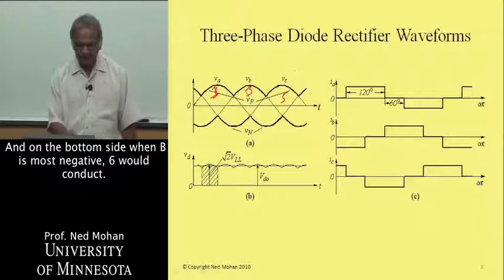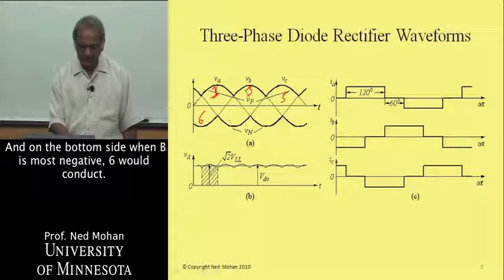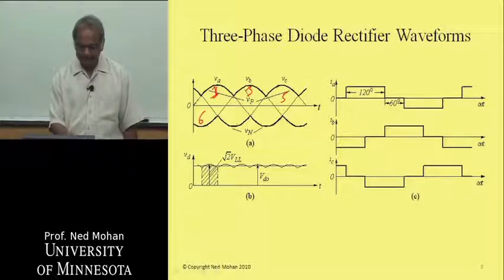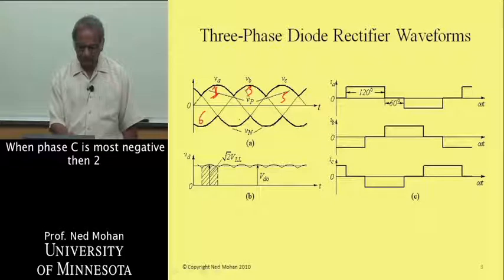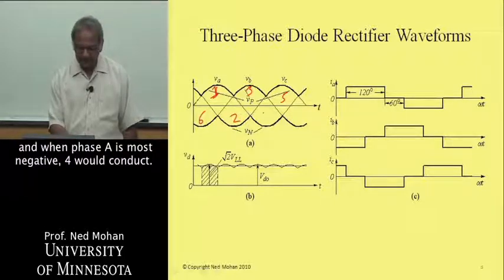On the bottom side, when B is most negative, six would conduct. When phase C is most negative, then two, and when phase A is most negative, four would conduct.